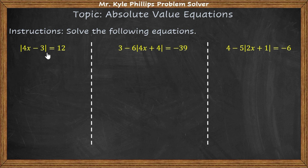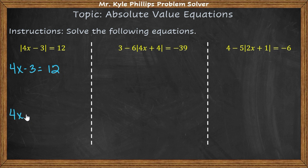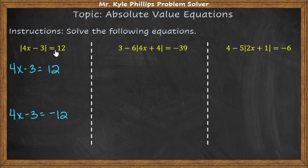Once the absolute value is isolated, you take the expression and set it equal to the positive value and also to the negative value. So I have 4x minus 3 equals 12, and 4x minus 3 equals negative 12. We set it to both positive and negative because you can have a positive or negative number inside the absolute value and still get the same result. For example, the absolute value of 5 is 5, and the absolute value of negative 5 is also 5.